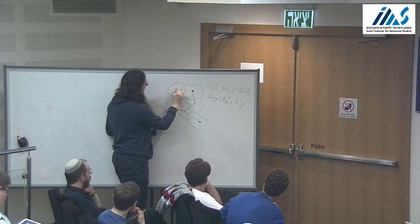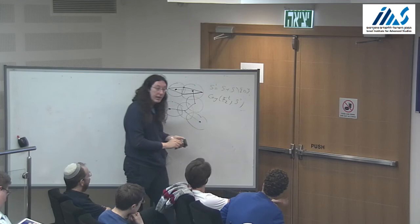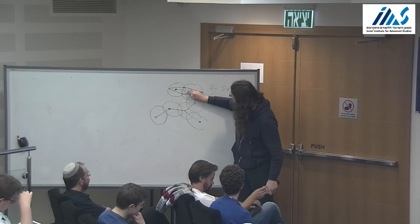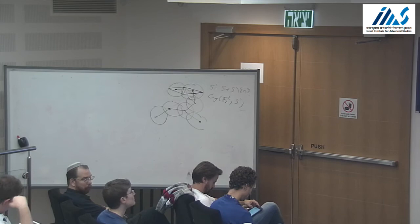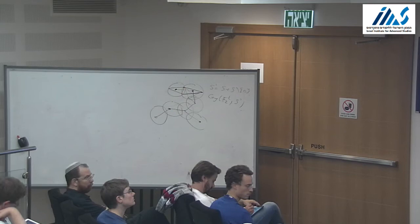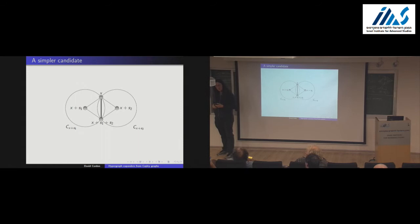Within each blob you have a complete thing which is a good expander. If two blobs are connected, you can walk from one to the other — there's a triple such that this pair is contained within the neighboring blob, and you can keep moving. You can walk around the whole thing: first walk within the blob, then percolate between the blobs. You can percolate within blobs easily because it's a complete three-uniform thing, and percolate between blobs because of this particular property.